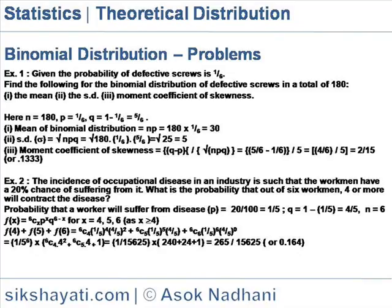Probability that a worker will suffer from disease: p is equal to 20%, that is 20 by 100, is equal to 1 by 5. So q is equal to 1 minus 1 by 5, that is 4 by 5. Here n is equal to 6. So f(x) is equal to 6Cx, p to the power x into q to the power 6 minus x.